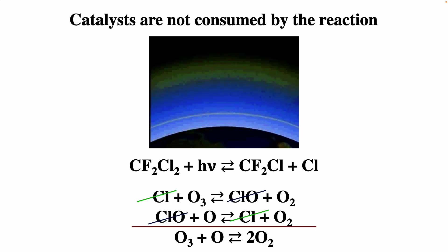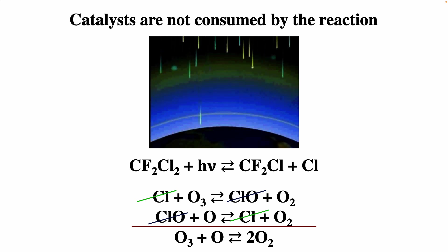Another example of a catalyst is chlorine. CFCs were used as refrigerants. When they got into the atmosphere, if hit by light, they could break the chlorine-carbon bond, and that chlorine atom could catalytically destroy ozone. The two steps are: chlorine atom plus ozone forms ClO plus O₂, and ClO plus oxygen forms chlorine plus O₂. The catalyst is there at the beginning and at the end, so it's not in the net reaction. The ClO is a reaction intermediate — it's made by the reaction and then consumed by the reaction.